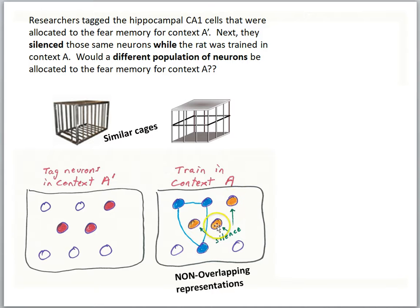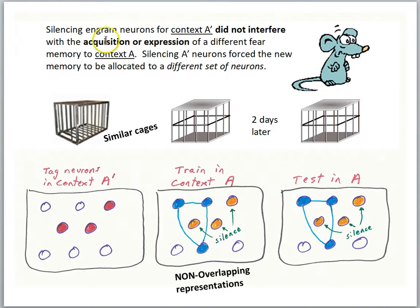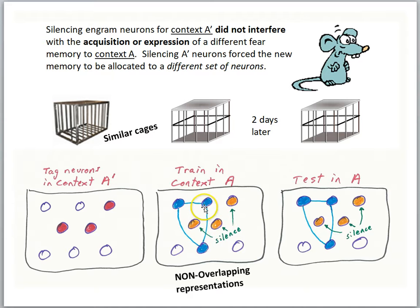Because the researchers were silencing the engram for A', silencing engram neurons for context A' did not interfere with the acquisition or expression of a different fear memory to context A. Silencing A' neurons forced the new memory to be allocated to a different set of neurons. By silencing the A' neurons, it was forcing the brain to use other neurons to encode the memory for the fear of context A. And when they were tested in context A, they had a fully normal fear response.